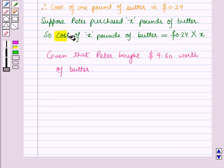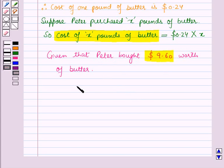Which means the total cost of x pounds of butter is equal to 9.60 dollars. Therefore, 0.24 dollars into x is equal to 9.60 dollars.